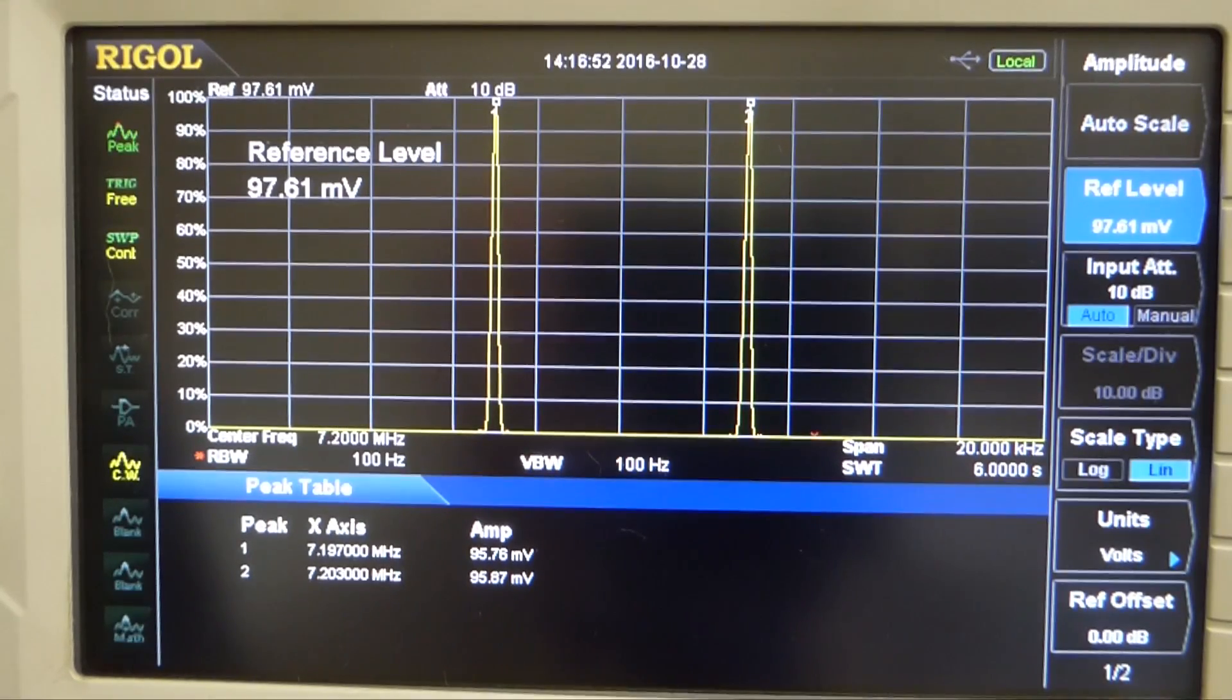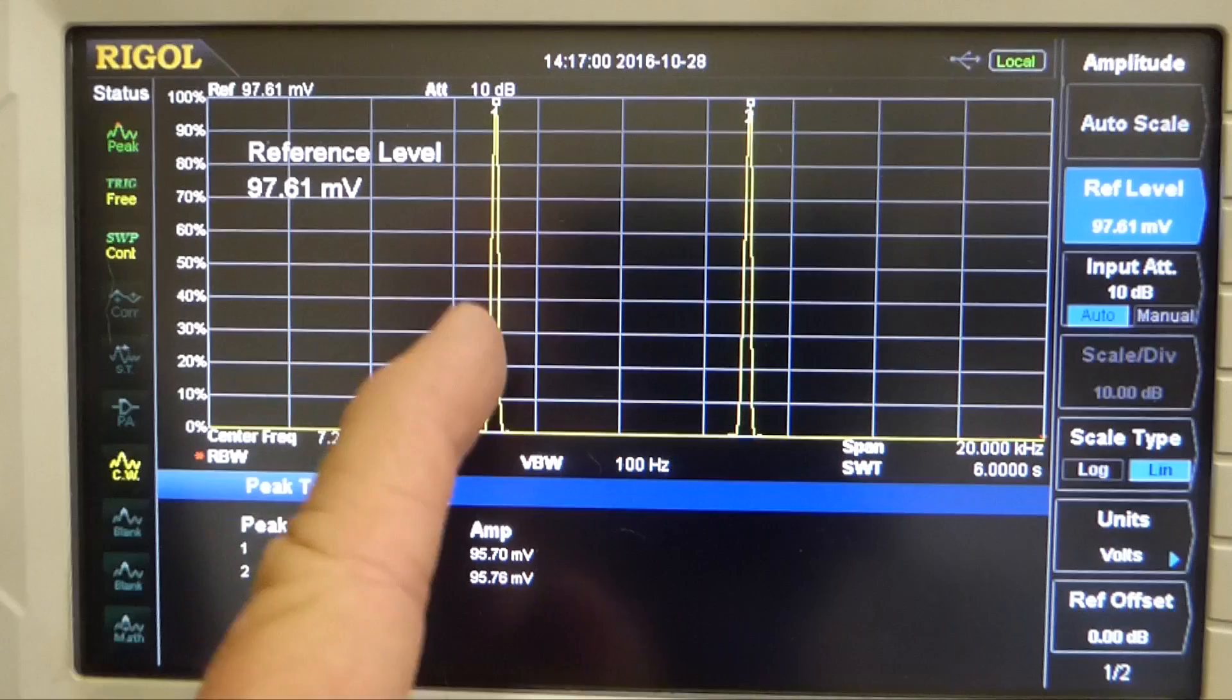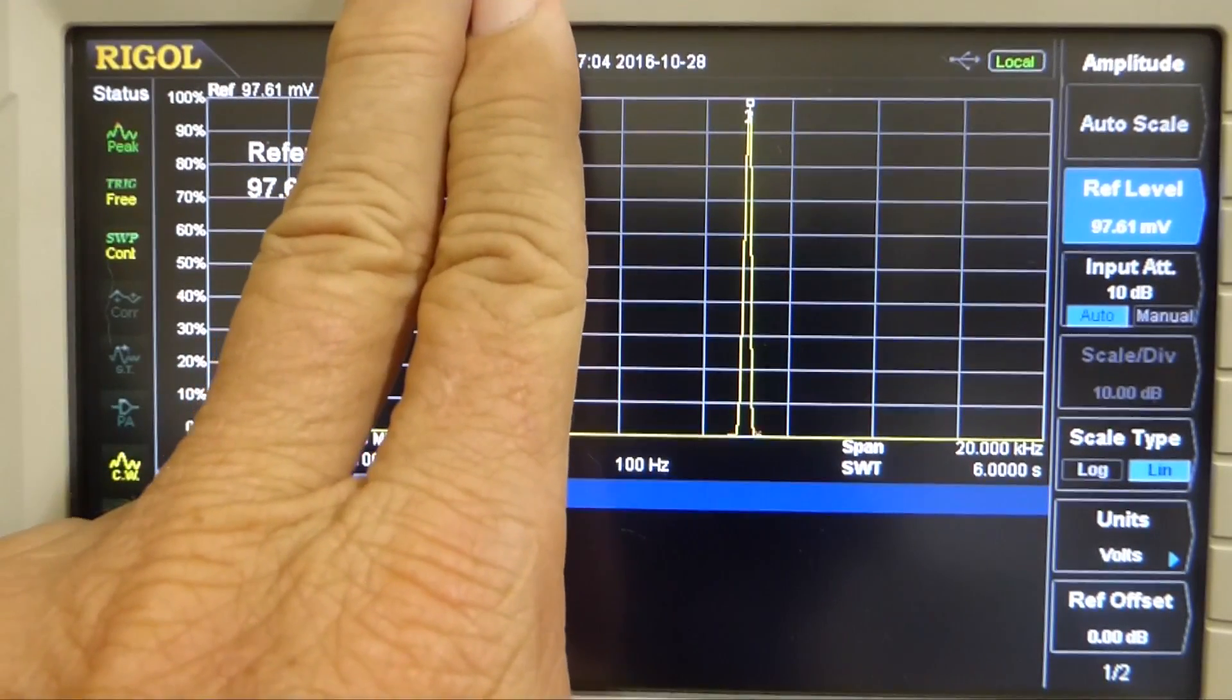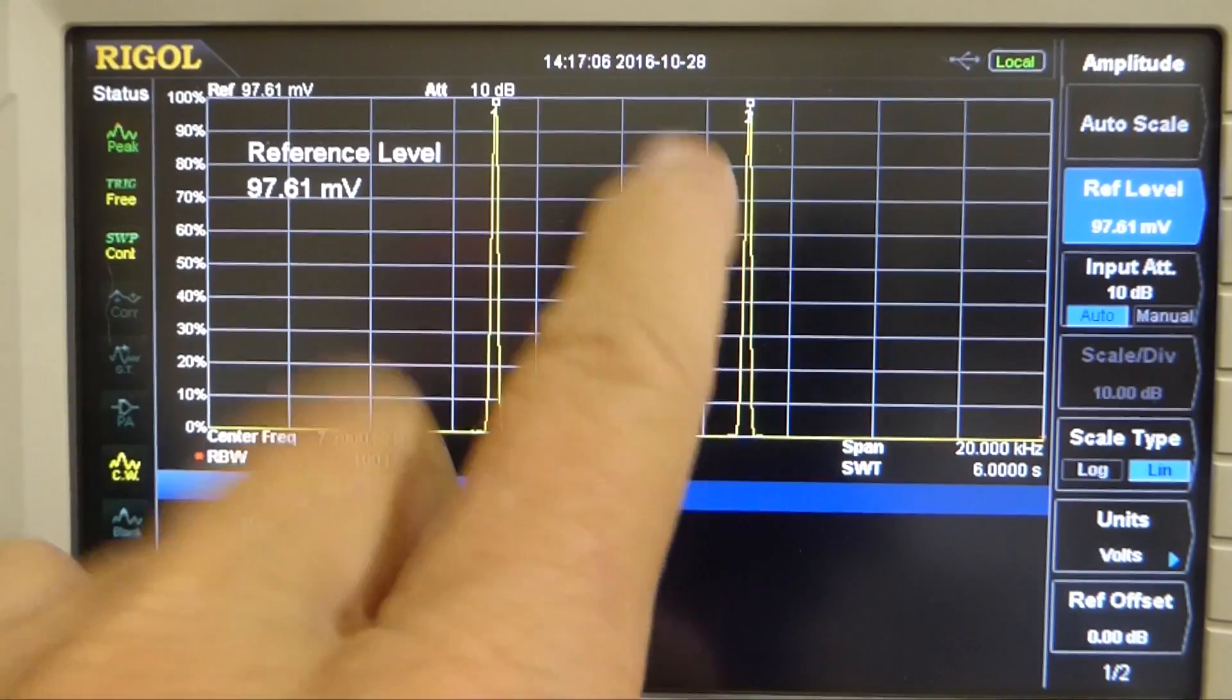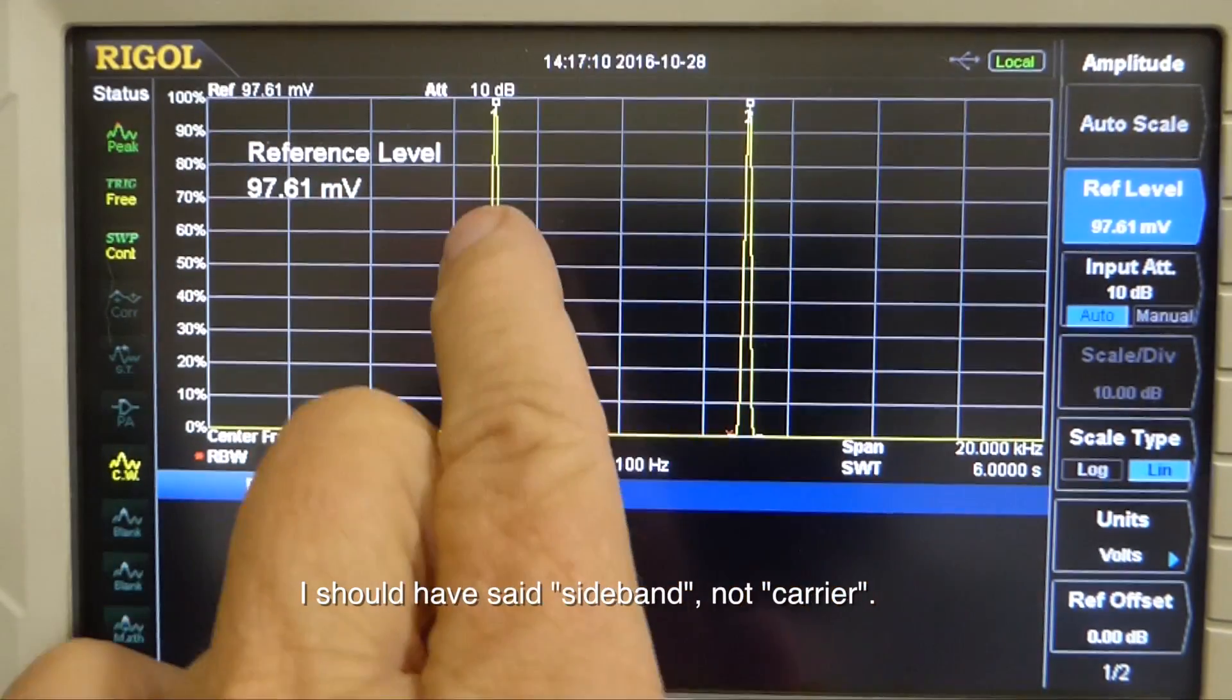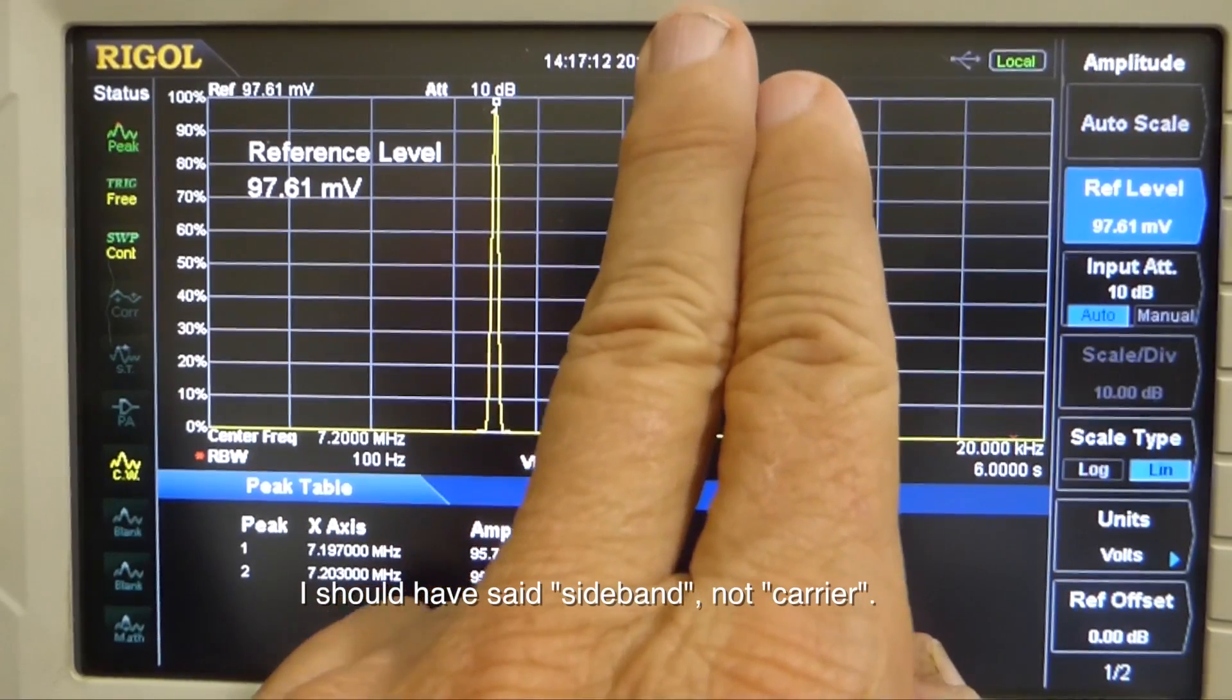What single sideband is, a very common HF mode of operation and VHF for that matter, we get rid of one of these. Usually just use a filter to get rid of one of these, then all of the energy is in this carrier. That would be upper sideband or all of the energy is in this carrier, which is lower sideband.